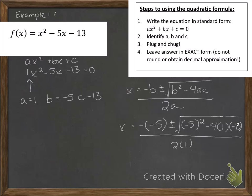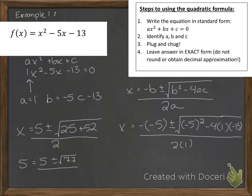So let's evaluate this piece by piece. What is negative, negative 5? Well the two negatives cancel out and they give us positive 5. So we have 5 plus or minus. Well what is negative 5 quantity squared? Negative 5 quantity squared is positive 25. What is 4 times 1 times negative 13? That gives us positive 52. And then we put all of this over 2. So let's keep going and simplify this. 25 plus 52. What is that? Well it's 77.